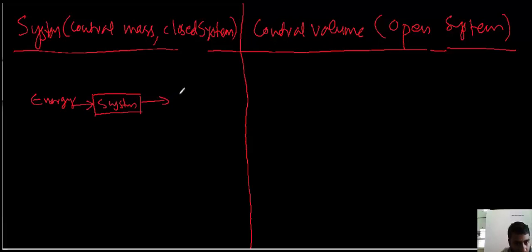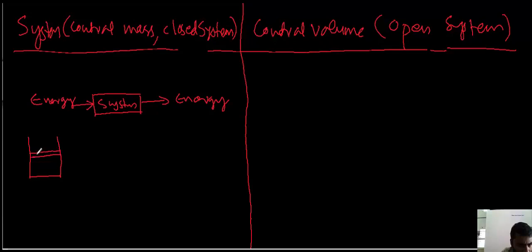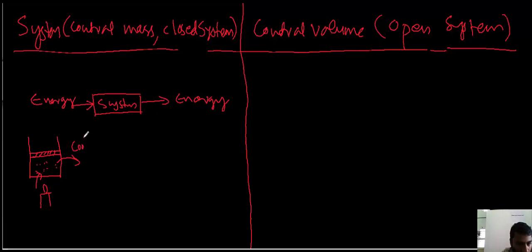Energy is going out of the system also. For example, if I take a piston-cylinder device, some fluid will be there inside. This fluid is not allowed to go out, so this is called control mass — mass is not changing. If I heat it, energy is going inside the system, and if the ambient temperature outside is cooler, energy will also go out of the system.